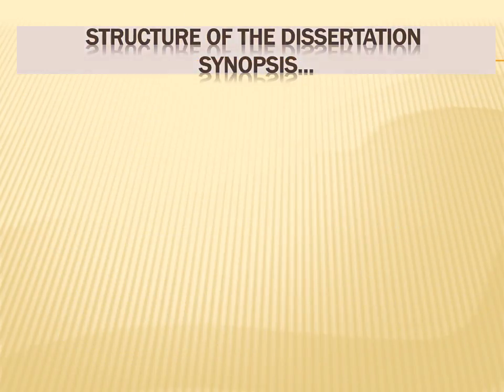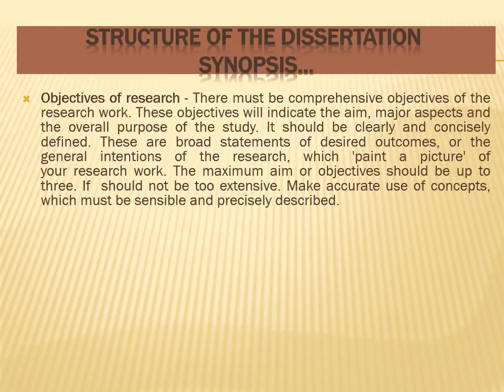The next step is objectives of research. There must be comprehensive objectives, ranging from one to a maximum of three — no more than that. These objectives indicate the major aspects and the overall purpose of the study. They should be clearly and concisely defined — broad statements of desired outcome or the general intention of the research. Make accurate use of concepts which must be sensible and precisely described.